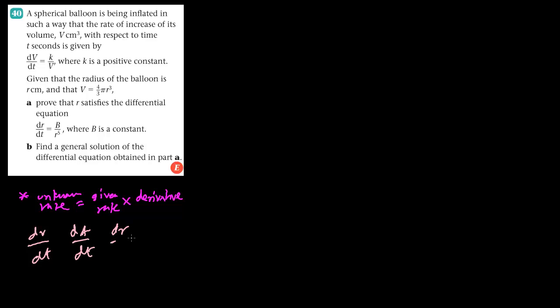This is a rate of change question. Remember, for rate of change questions, you have to find the unknown rate. The rate would be the given rate times a derivative. Rate is anything that changes with time. So the rate of change of volume is dv by dt, rate of change of area is dA by dt, rate of change of radius is dr by dt. The derivative, if you differentiate volume in terms of radius, would be dv by dr, or their reciprocal.